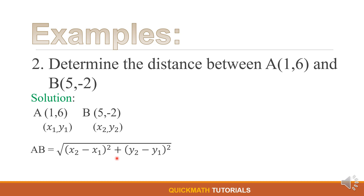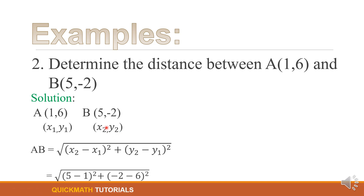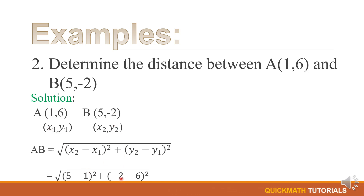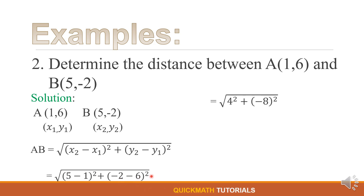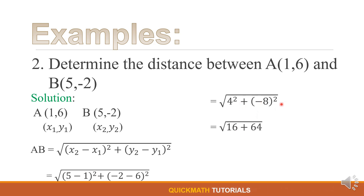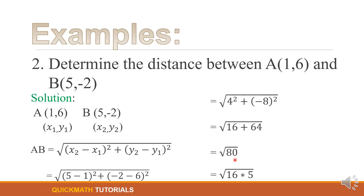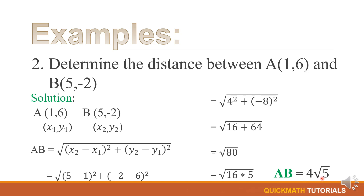Using the distance formula, we will substitute the values of x sub 1, y sub 1, x sub 2, and y sub 2. Our x sub 2 here is equal to 5, x sub 1 is equal to 1, our y sub 2 is negative 2, and y sub 1 is 6. 5 minus 1 is 4. Negative 2 minus 6 — since they have the same sign, we add 2 plus 6 to get 8, then copy the negative sign. 4 squared is 16, negative 8 squared is 64. 16 plus 64 is equal to 80. We can factor 80 as 16 times 5, and the square root of 16 is 4. So, we have 4 square root of 5.